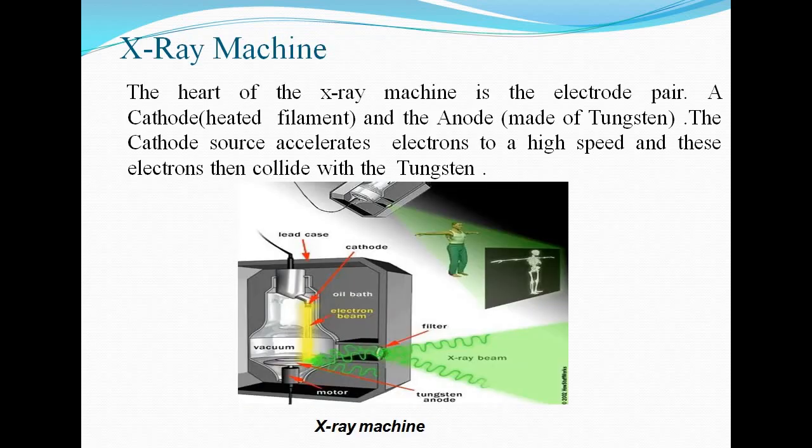X-ray machine. The heart of the X-ray machine is the electrode pair, a cathode and the anode. The cathode sources and accelerates electrons to a high speed and these electrons then collide with the tungsten.